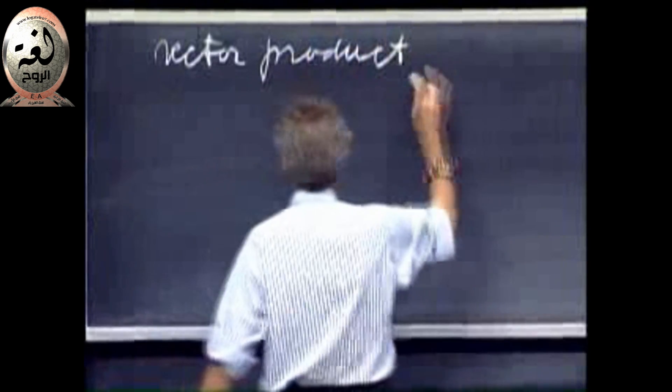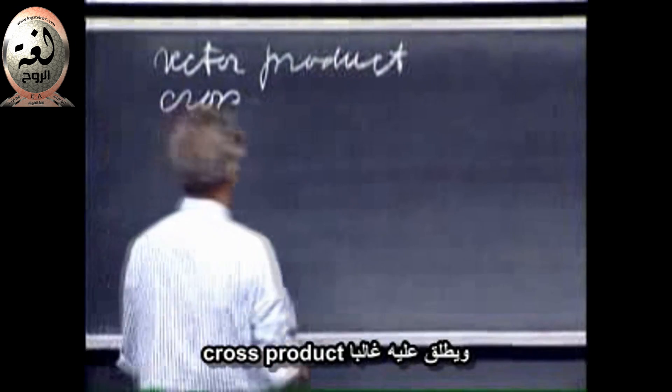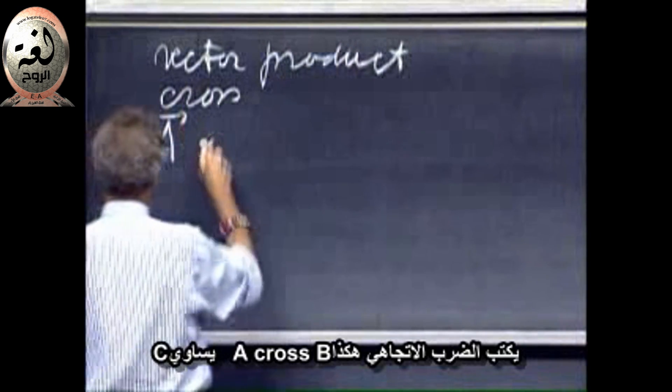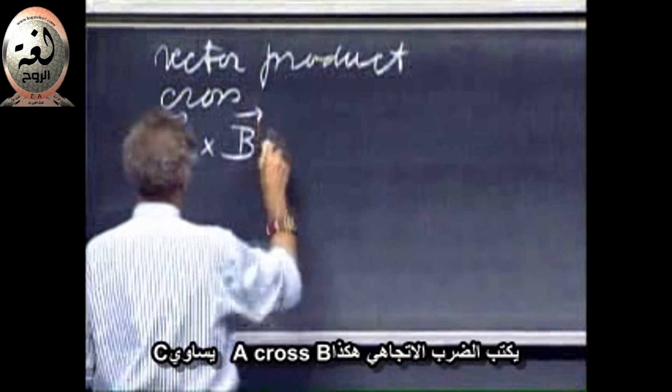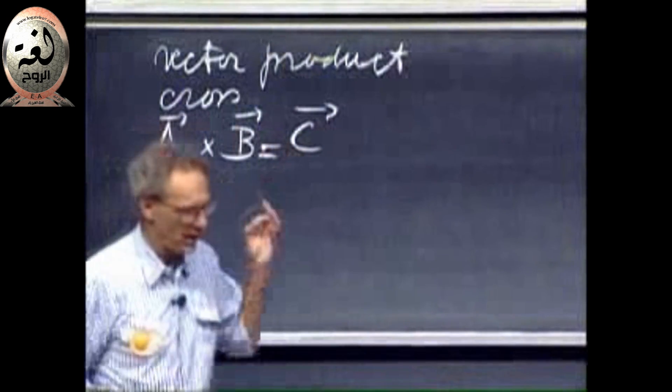Or also called, most of the time I refer to it as the cross product. The cross product is written like so: A cross B equals C. It's a cross, very clear cross.